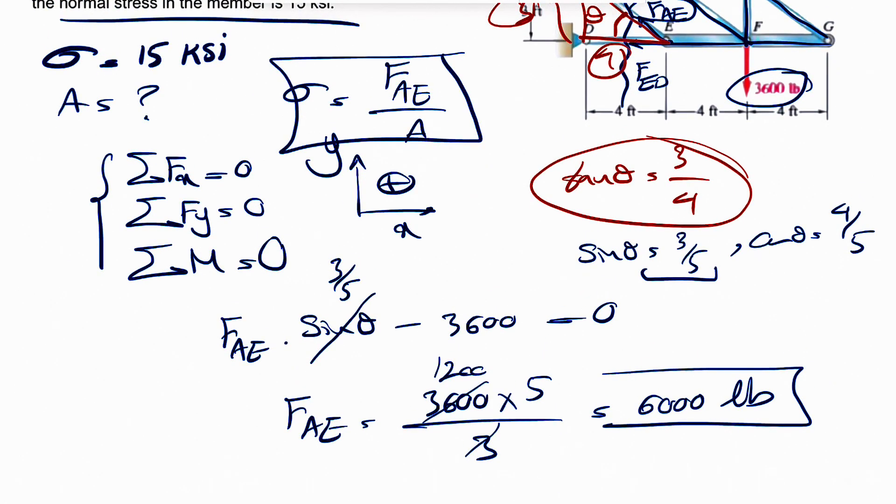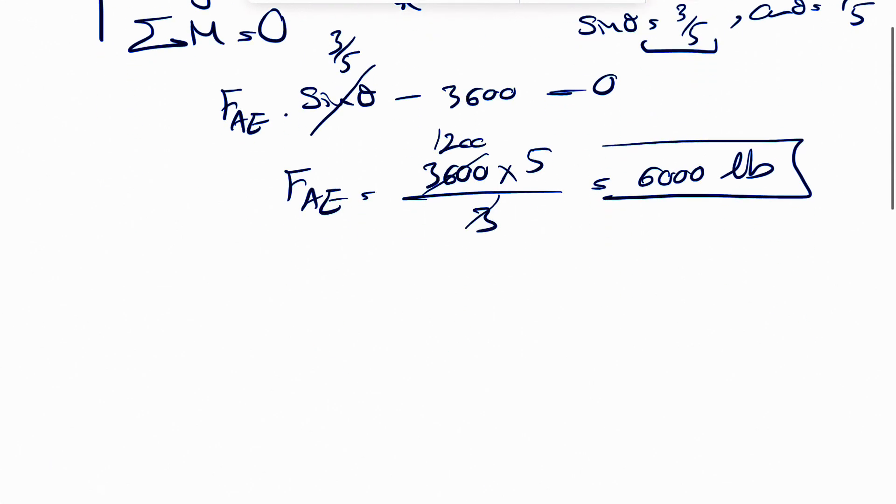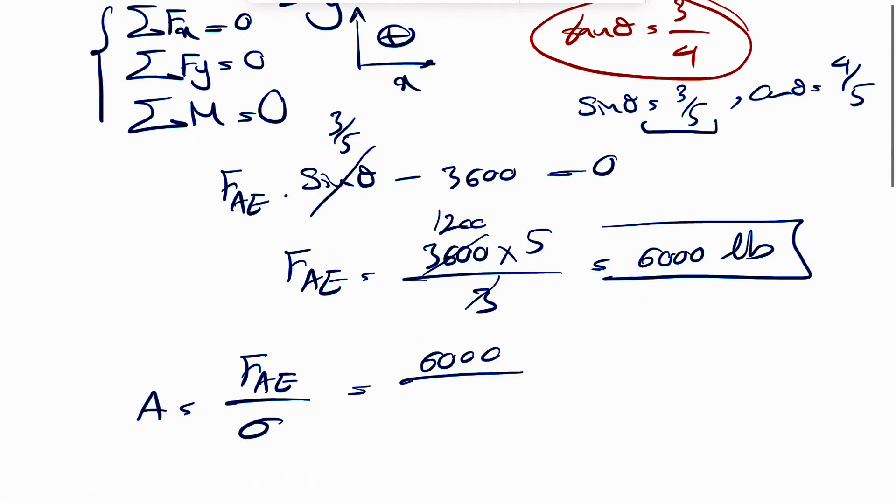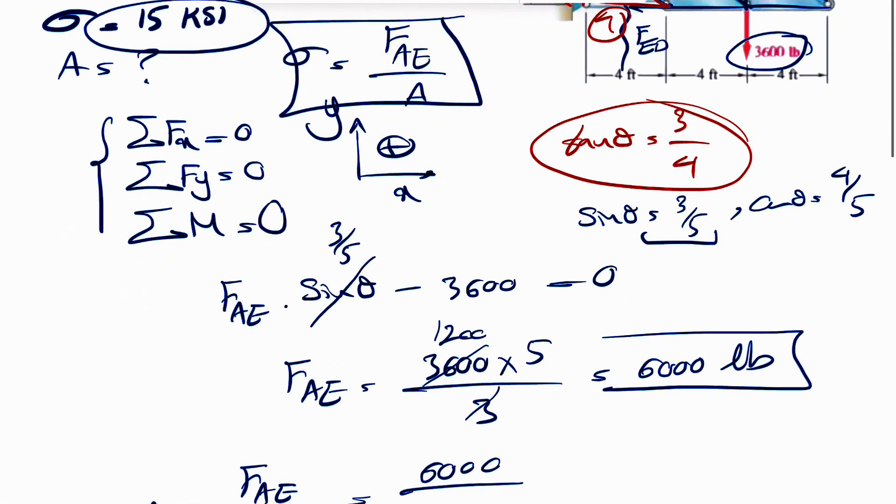So now that we have this, we can use our stress equation. Everything is known in here other than the area. So basically, our area is FAE divided by the stress. So 6000 divided by 15 KSI.